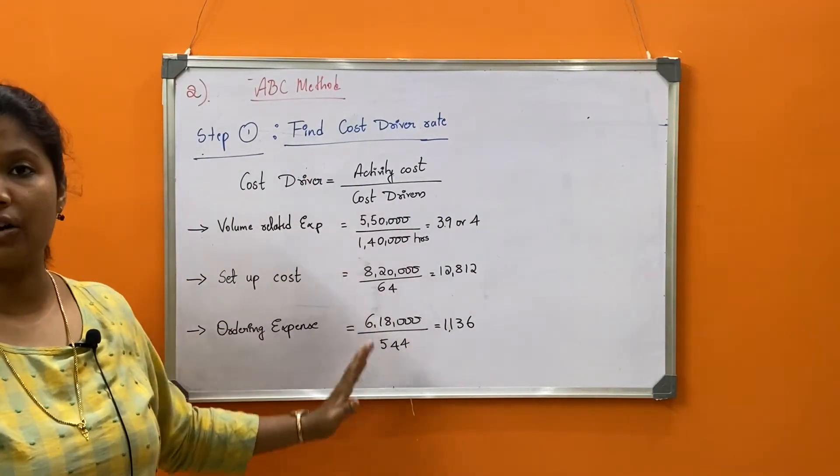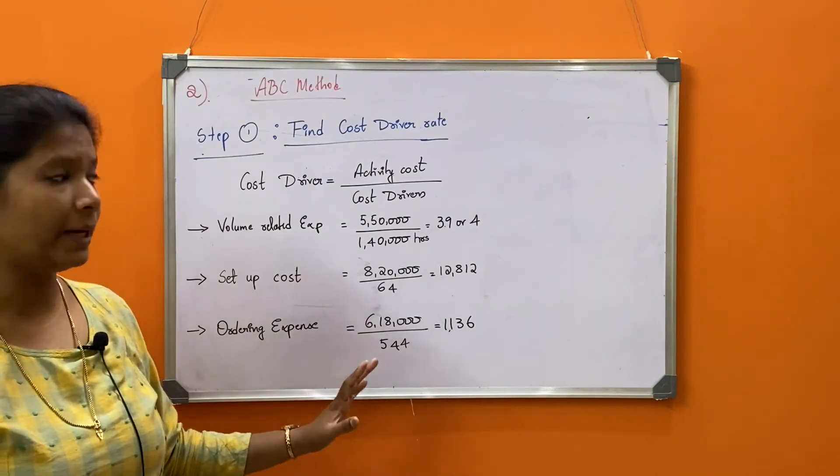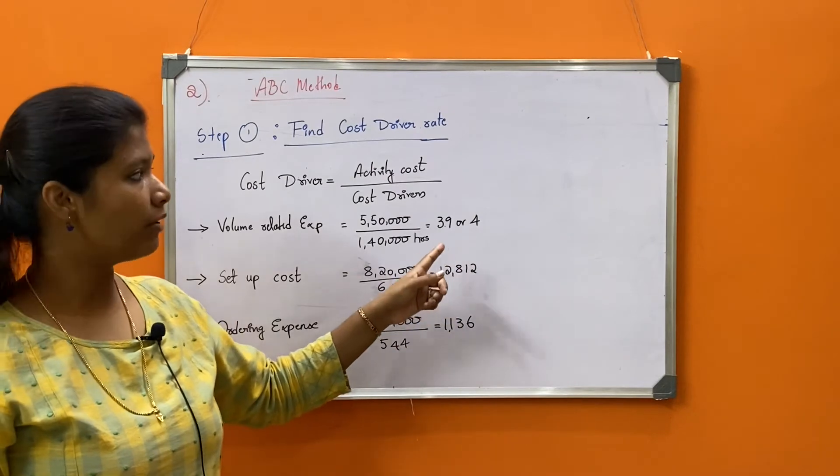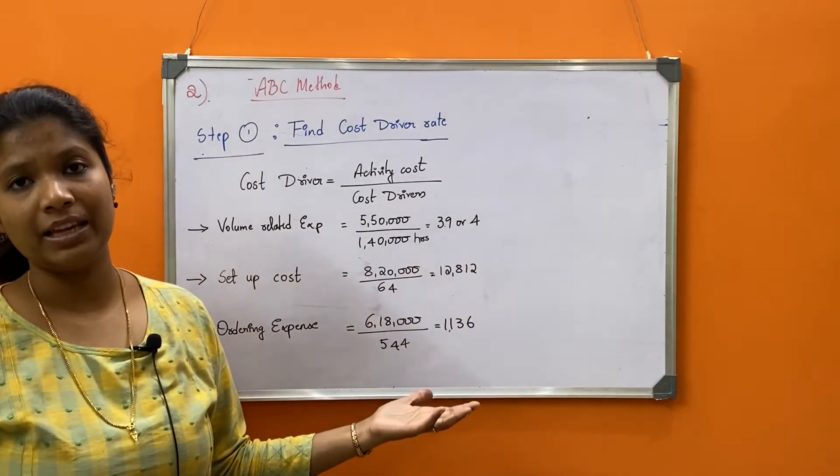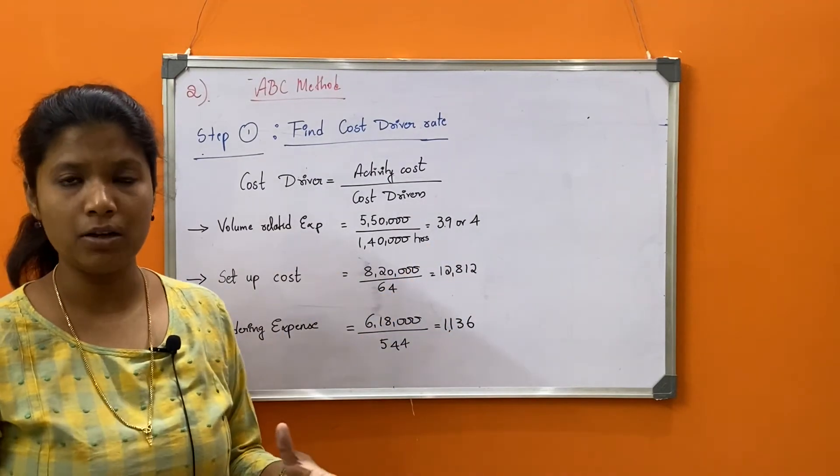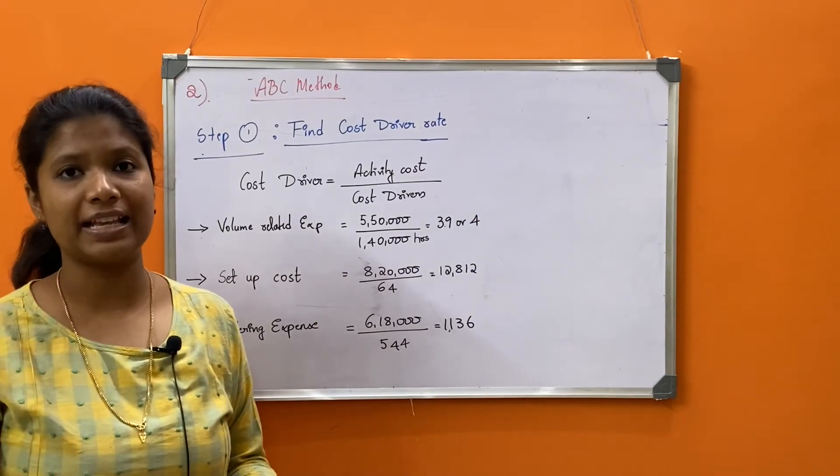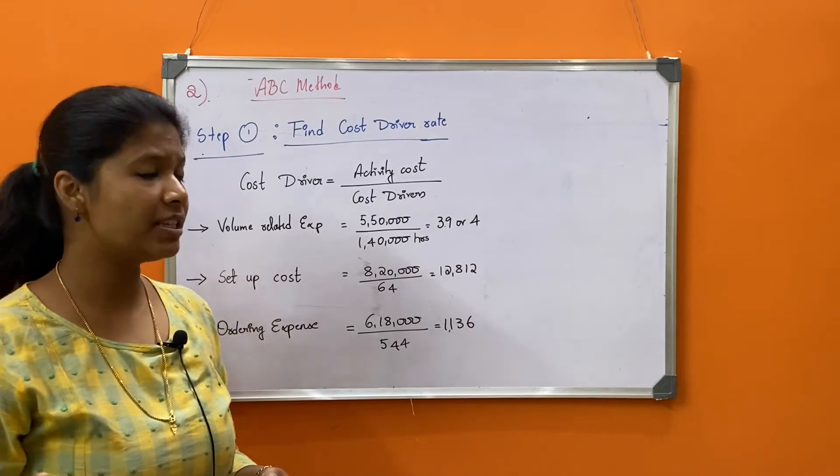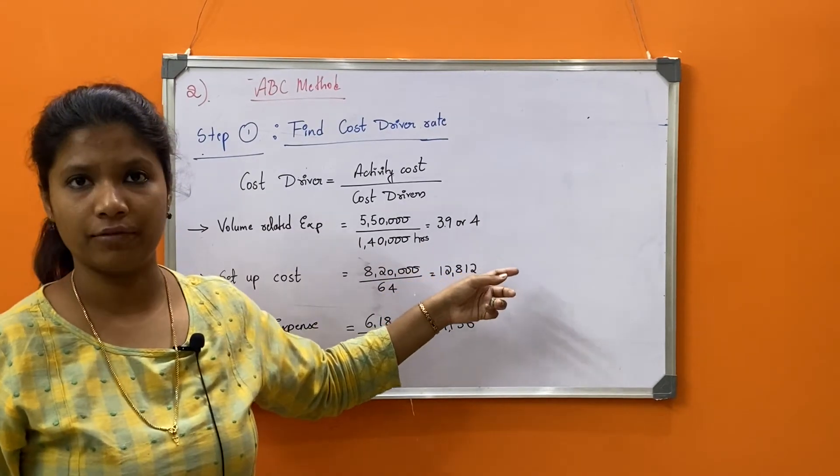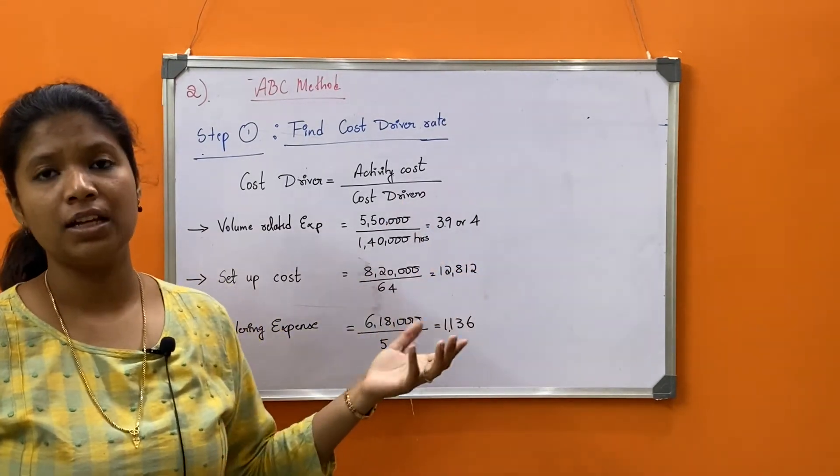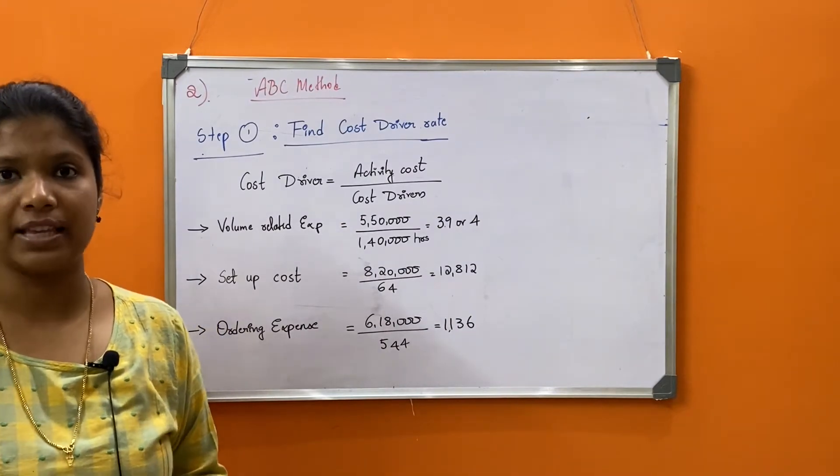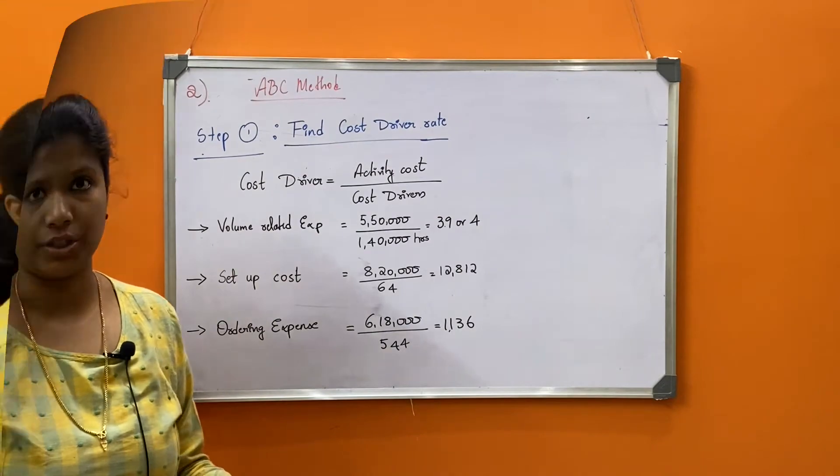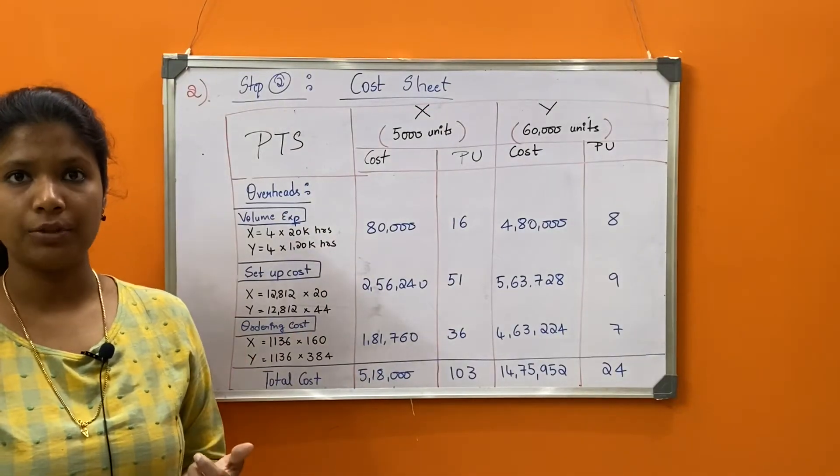So we have found out all the cost driver rates. I have rounded off here - it's better we round it off because answers will be simpler. Otherwise it will just be decimals. If you want, you can write two decimal points, or just round it off. When you round it off, you will get more exact values as the answer. Let's move on to step two, the cost sheet.